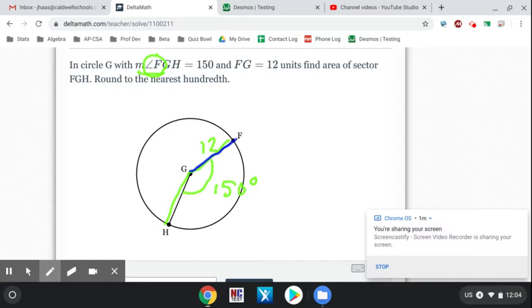To find sector area, since it says the word area, I'm going to start with my formula for area of a circle, which is area equals pi R squared. I can replace my R with 12. So pi times 12 squared is 144 pi.